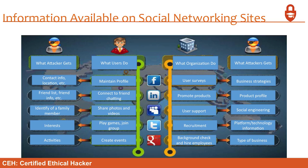Information available on social networking sites — what an attacker gets: contact info, location info, friends list info, identity of family members, interests and activities. What users do: maintain a profile, connect to friends and chat, share photos and videos, play games, join groups, and create events. What organizations do: conduct user surveys, promote products, provide user support, handle recruitment, and perform background checks. Through that social footprint, the attacker can obtain business strategies, product profiles, social engineering information, platform technology information, and types of businesses.